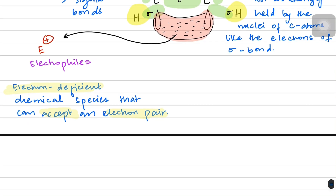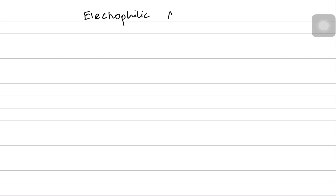Let's talk about the electrophilic addition mechanism. We'll use an example to begin with. Imagine you have your ethene molecule, where one bond is the sigma bond and the other is the pi bond.